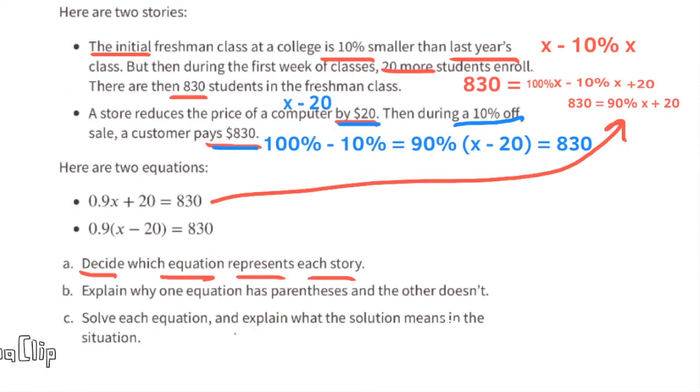The next story, where the store reduces the price of a computer by $20, then during a 10% off sale, a customer pays $830. I could write the equation 90% times x minus 20 equals 830. And remember, 90% as a decimal would be 0.9. So I would use the equation 0.9 times x minus 20 equals 830 for this story.